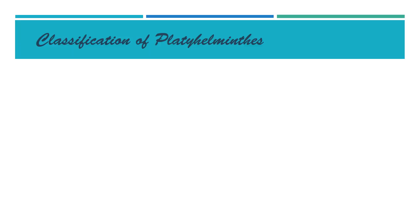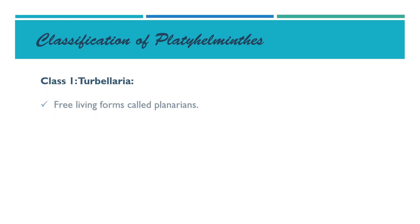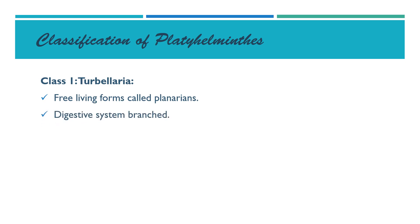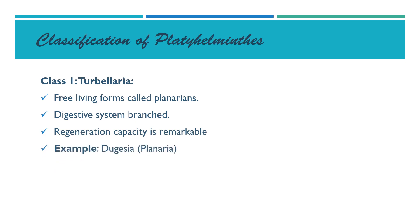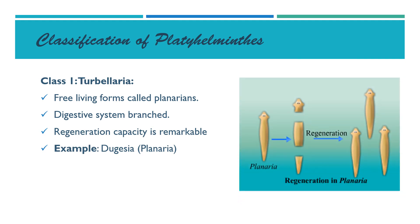Now we will discuss the classification of Platyhelminthes. Class 1 is Turbellaria. Organisms of this class are free-living and are commonly called planarians. These organisms have a branched digestive system. Regeneration capacity is remarkable in these organisms, as we see in the case of planaria. If planaria is cut into sections, each section will regenerate into a whole organism.